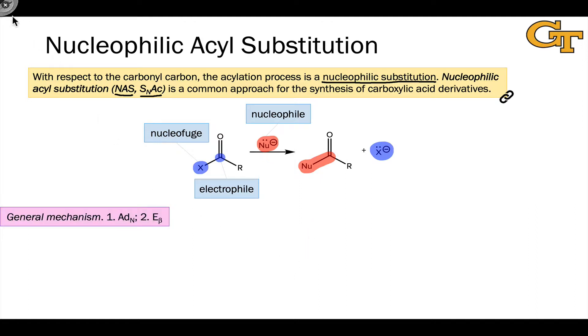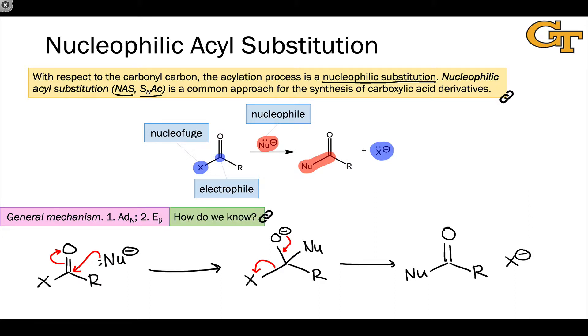Unlike an SN2 context, this mechanism occurs in a two-step process. First, the nucleophile adds to the carbonyl carbon in an AdN step, and then the leaving group, or nucleophuge, is eliminated in a beta elimination step. If you're interested in learning more about how we know that this is the mechanism of nucleophilic acyl substitution, as opposed to a simpler SN2 mechanism, check out the linked paper here.